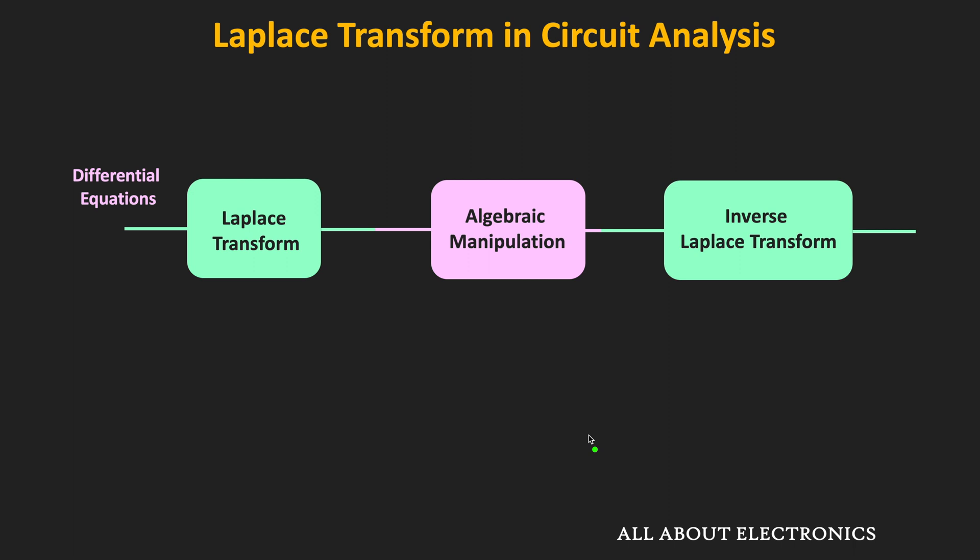In the earlier videos of the Laplace transform we have seen how to use the Laplace transform for circuit analysis. By first applying KVL or KCL in the circuit we can get the differential equation of the current or the voltage. Then using the Laplace transform properties we can convert these differential equations into algebraic equations in the S domain. And after some algebraic manipulation, using the inverse Laplace transform we can find the time domain expression of the voltage or the current.